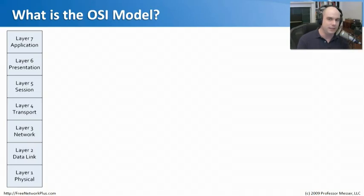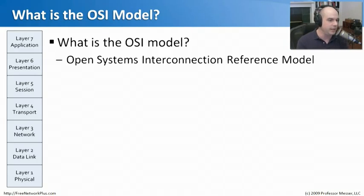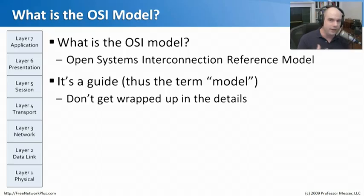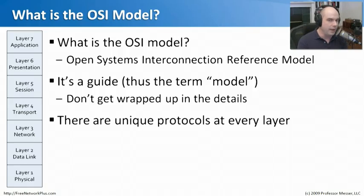This can be a relatively dry subject, so what I've tried to do is apply some real-world perspective into the OSI model and how it works. OSI stands for the Open Systems Interconnection Reference Model. This was created to give us a guide to understanding the way that networks operate at the network and protocol level. But the idea here is that it is a model — don't get too wrapped up in very specific details. This is a topic you look at from an overall perspective, and we're going to approach it that way in this module.